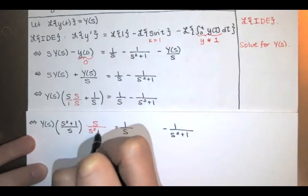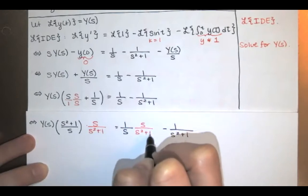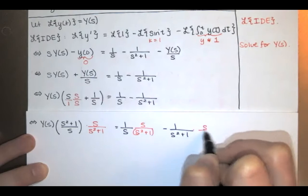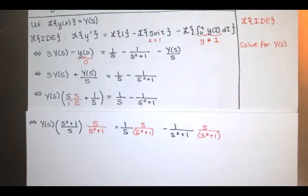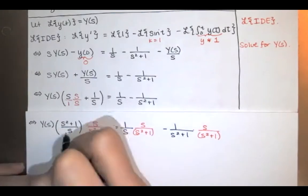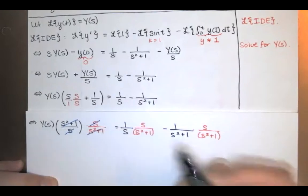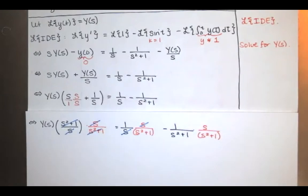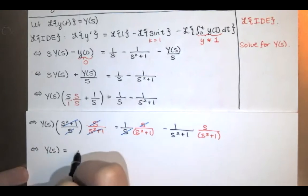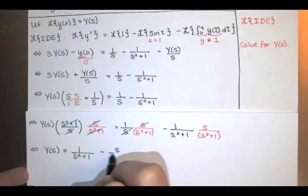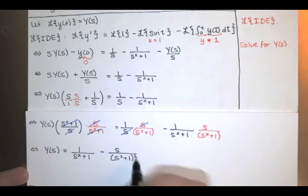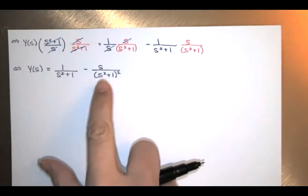I'm multiplying everything by s over s² plus 1 — the reciprocal — to get Y(s) by itself. After simplifying, the s's reduce and we get Y(s) equals 1 over s² plus 1, minus s over (s² plus 1) squared. I know the inverse transform of the first part. For the second part, I've seen expressions like that in my table of Laplace transforms, so I will look it up.